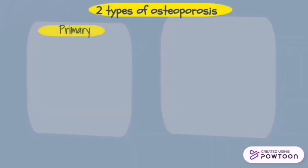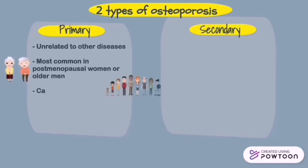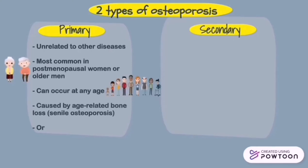There are two types of osteoporosis: primary and secondary. Primary osteoporosis is more common than secondary. Primary osteoporosis is unrelated to other diseases, most common in post-menopausal women or older men, can occur at any age, and is caused by age-related bone loss.